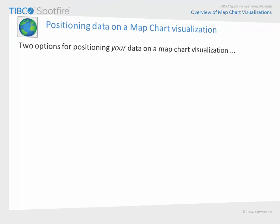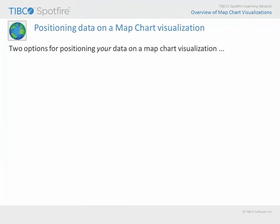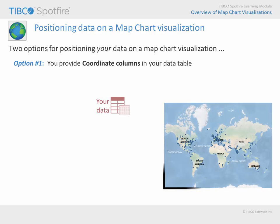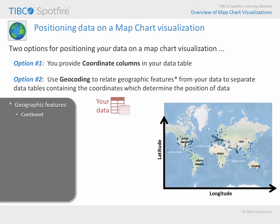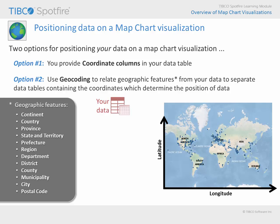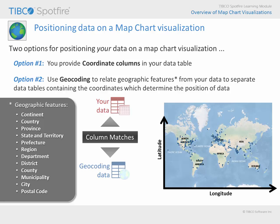Just to review, the two options for accomplishing the display of your data on a map are to provide latitude and longitude coordinates as part of your data table, or to use geographic features from your data table — which may include a variety of different levels of the geographic hierarchy in different parts of the world — to match columns to a geocoding data table provided by Spotfire. Then the map chart uses the positioning elements which are afforded as part of the geocoding data table. There are other configuration options and other layer types to discuss before we return to our demonstration.